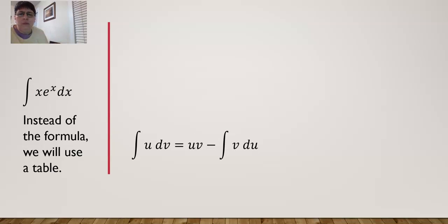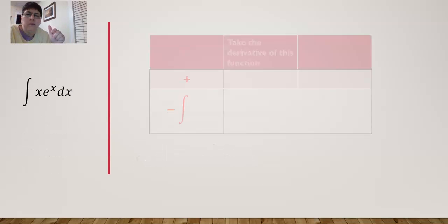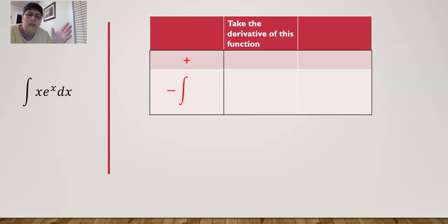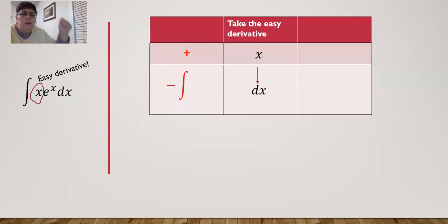So instead of using this formula right here, we are going to use the table. And it looks like this. It's got three columns, and we've got a plus and minus side. And the first one we take the derivative. So which one of these had the easier derivative?